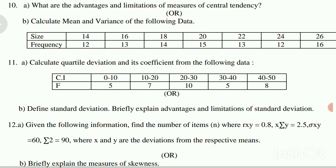Question 12a - Given the following information, find the number of items n where r_xy equals 0.8, sum of x, sum of y equals 2.5xy equals 60.